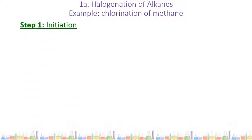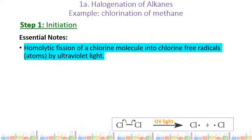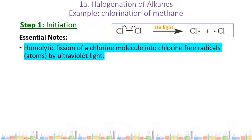Step one is always initiation — starting the reaction. What happens here is the homolytic fission of a chlorine molecule into chlorine free radicals by ultraviolet light. You can either write out a description or show the equation. Key things to look out for: use single-headed arrows to show the movement of one single electron, and include UV light, as it's the UV light that initiates the reaction.